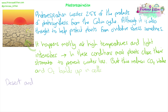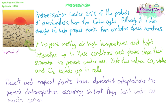To combat this, desert and tropical plants living in high light intensity and high temperature environments have developed adaptations to prevent photorespiration from occurring all the time, so they don't waste too much carbon and can still grow and survive. In normal plants without these adaptations, photosynthesis is known as C3, or they're called C3 plants, because they fix carbon dioxide into a three-carbon molecule, which is GP. That explains why we call the alternatives C4.